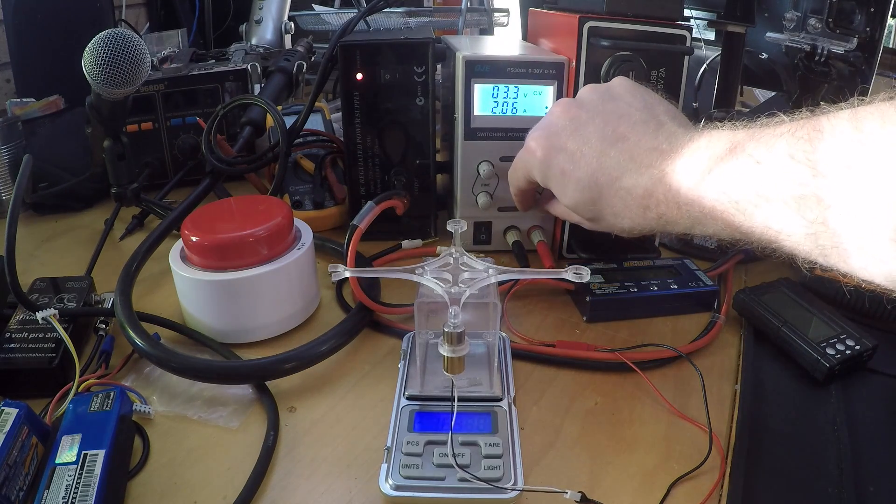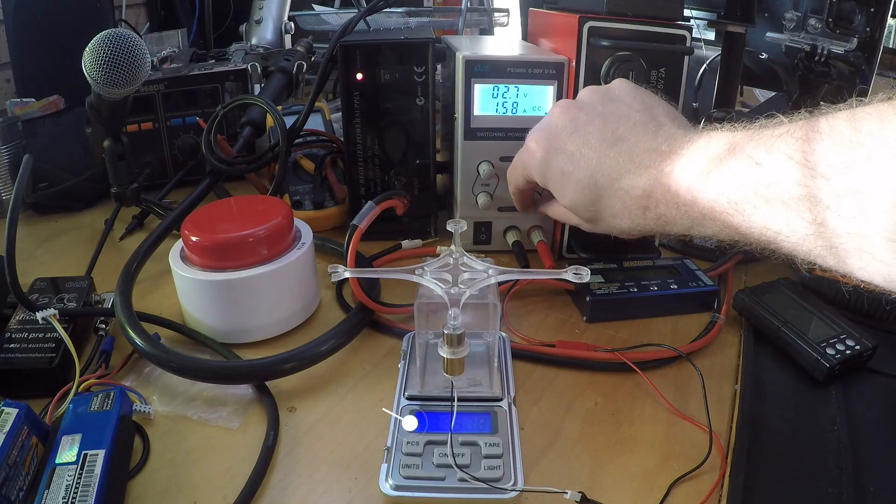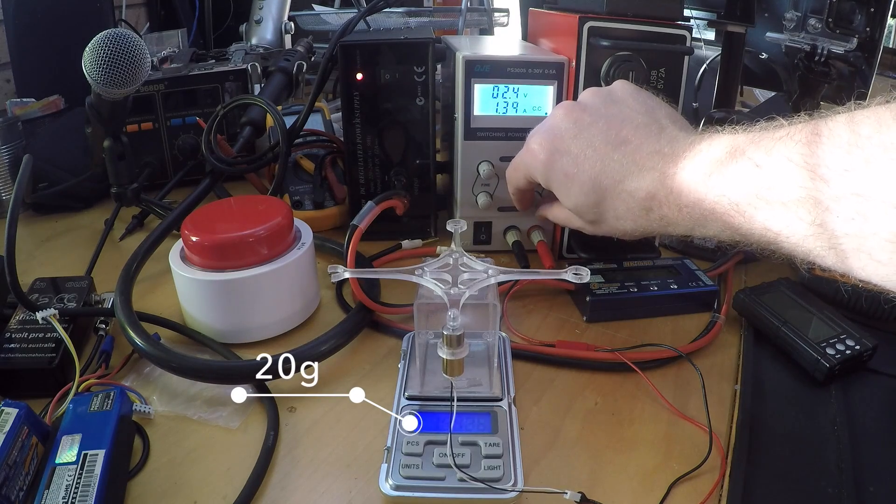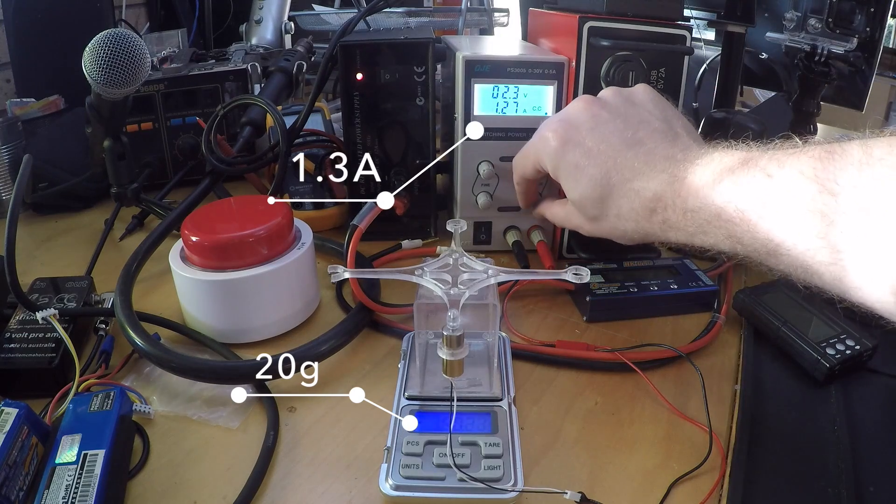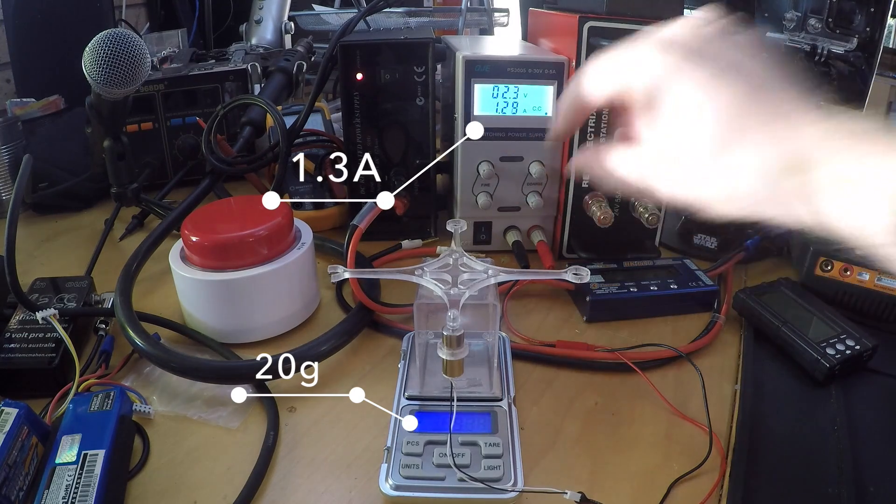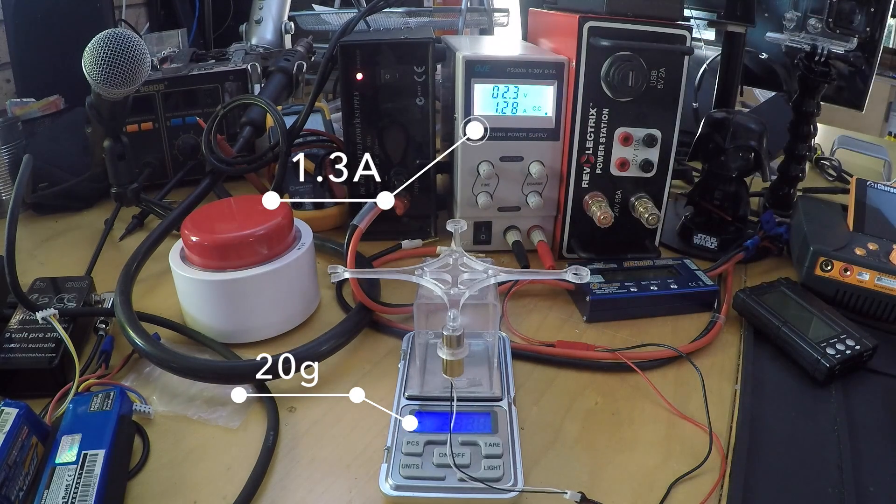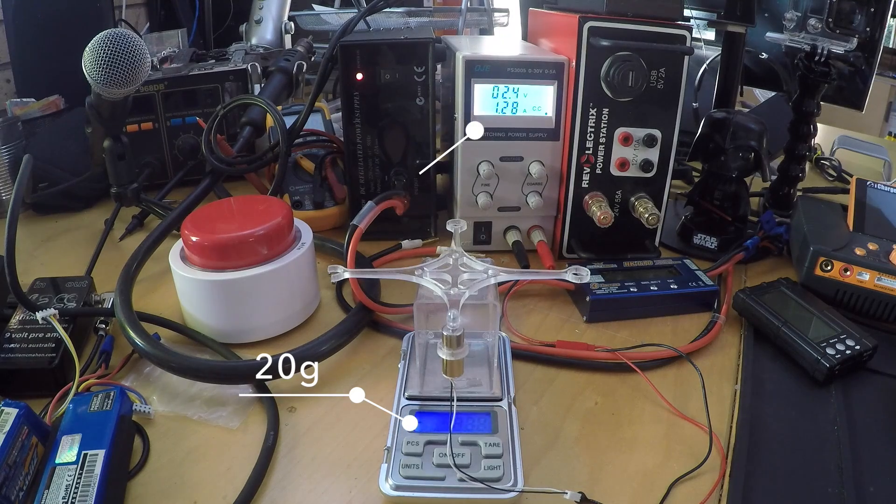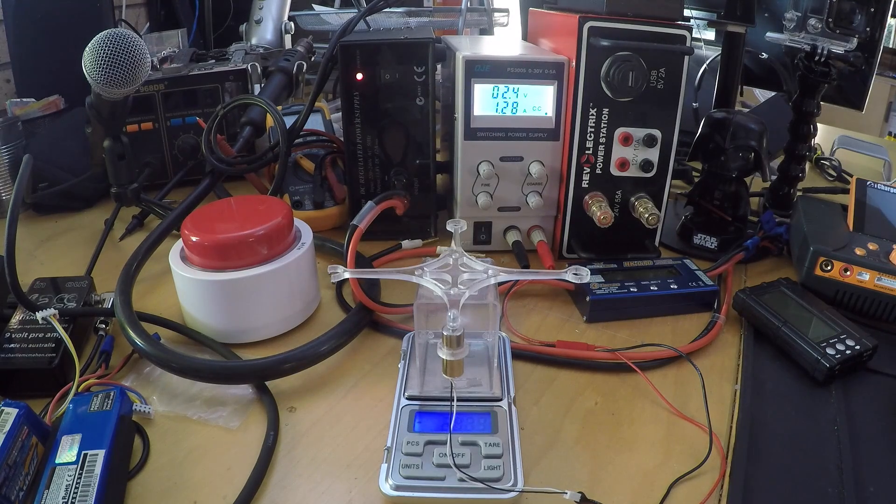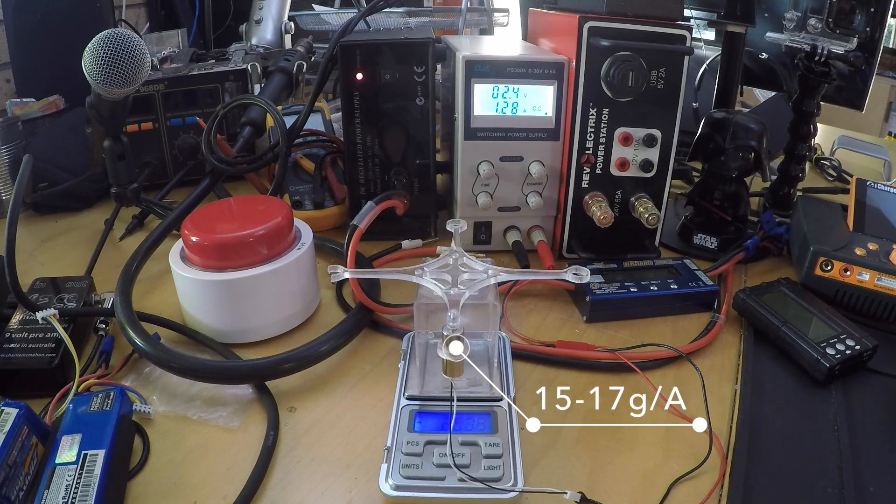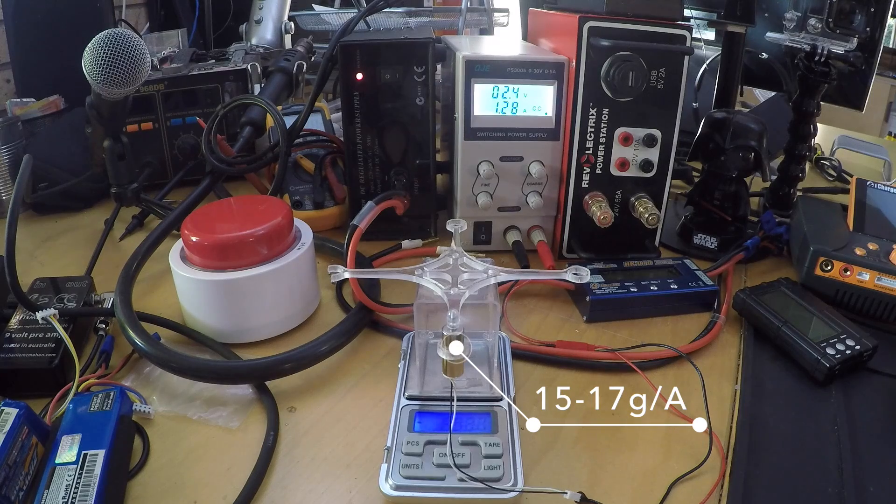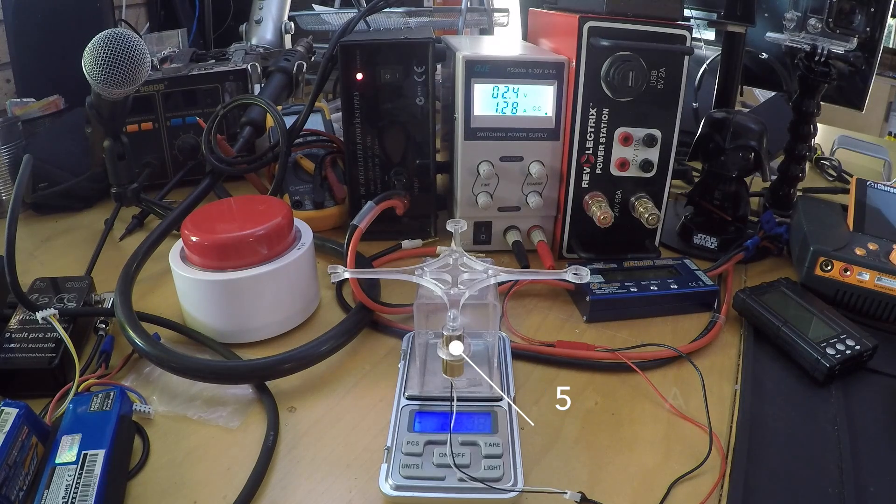Now, I limit the current until I see 20 grams on the scale. In this case, that's around 1.3 amps. That means across the usable throttle band, this motor prop combo produces between 15 and 17 grams of thrust per amp. What does that mean? That it's quite efficient.